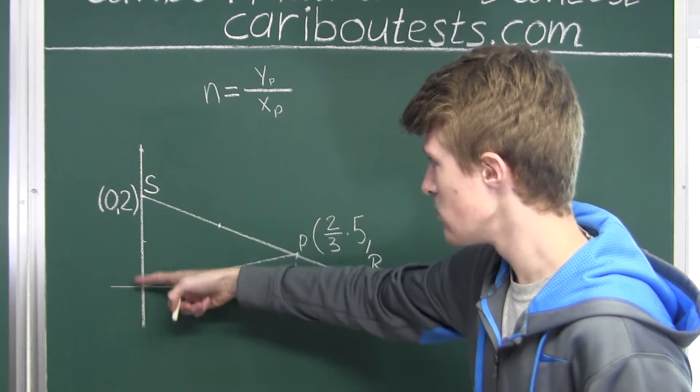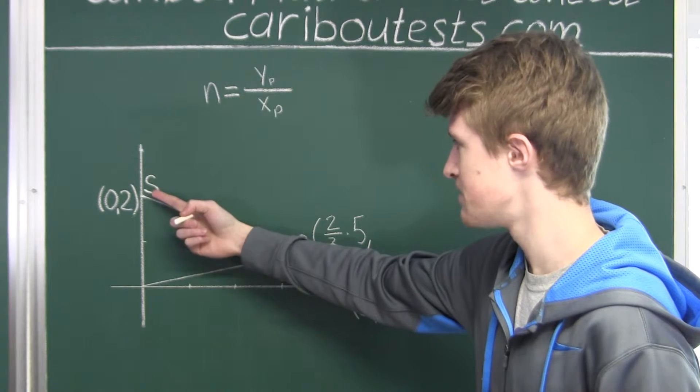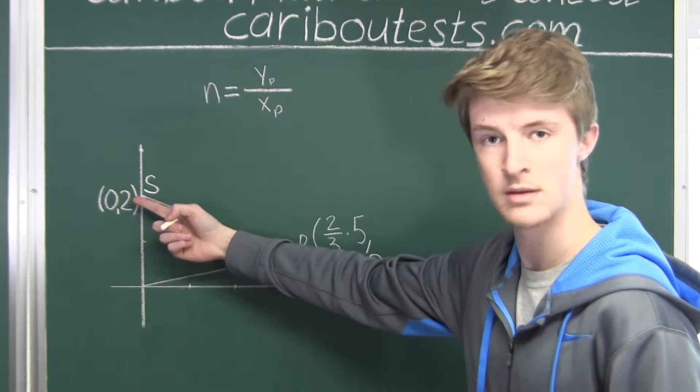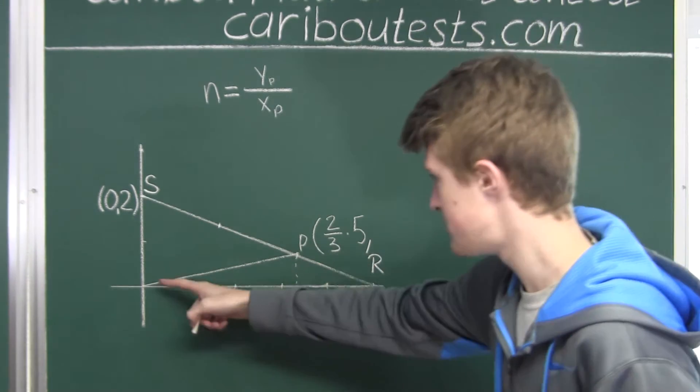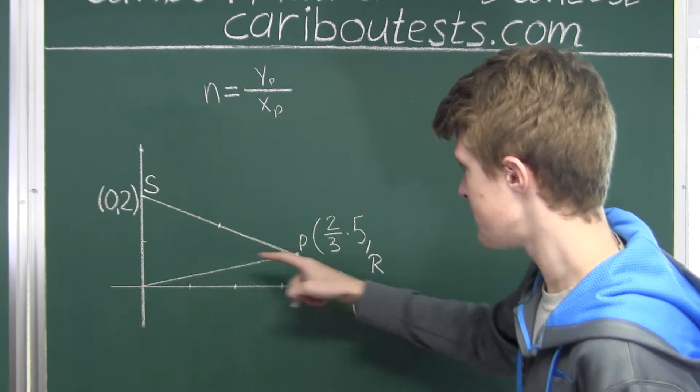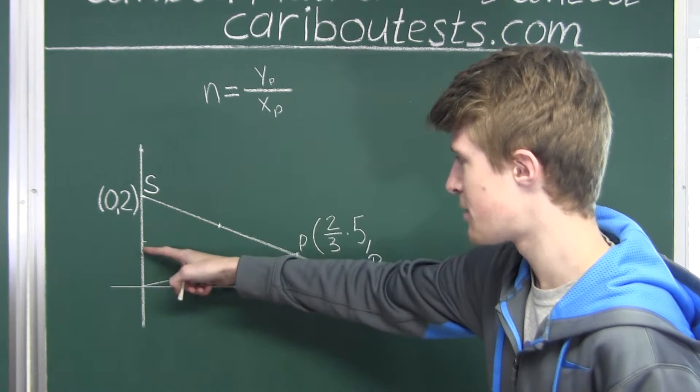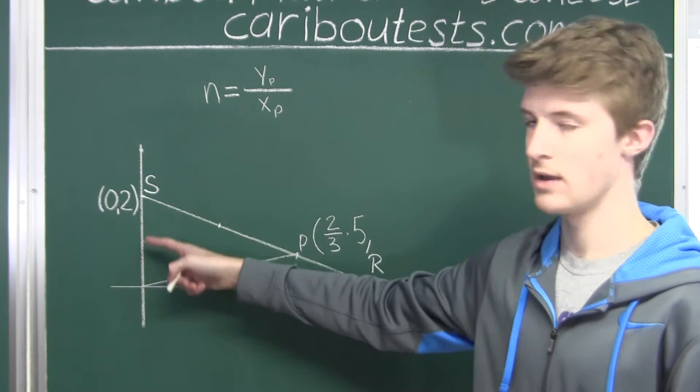And we know that that length is just the Y coordinate of this point S, which we know is 2. So that would, since we are going from the origin up to there, that would then be 1 third of this length 2.